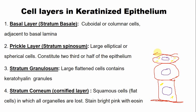The stratum corneum comprises the most flattened cells. In these cells, all the organelles are lost — no nucleus is present — and the cell is filled only with keratin. The old organelles are lost and it only comprises keratin.